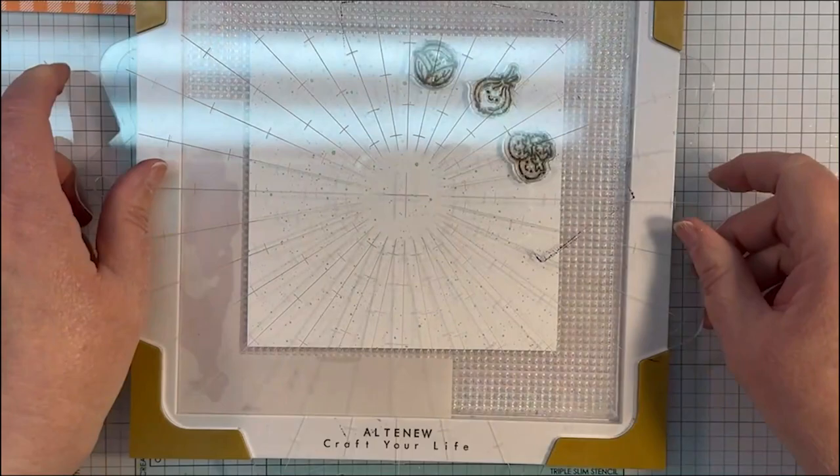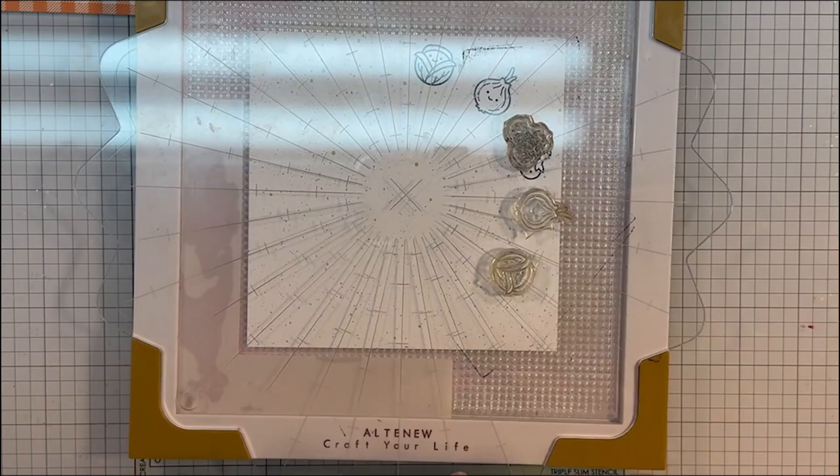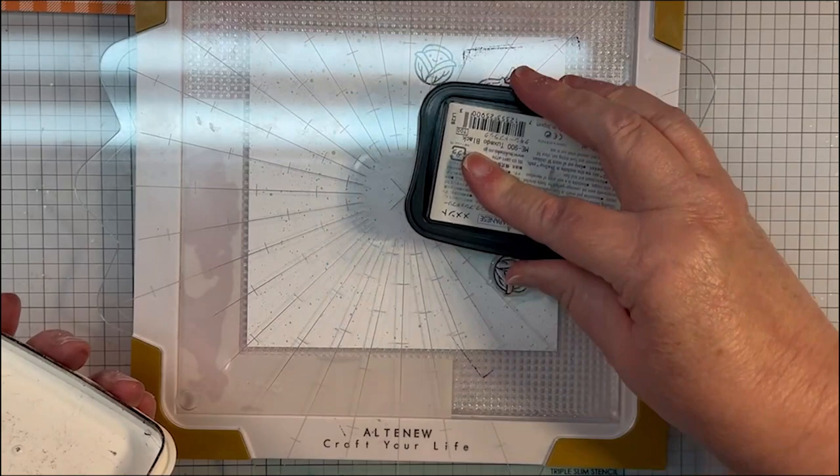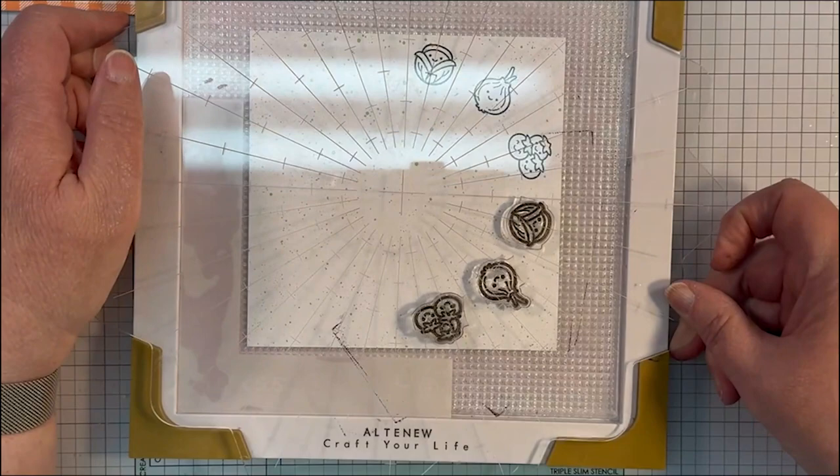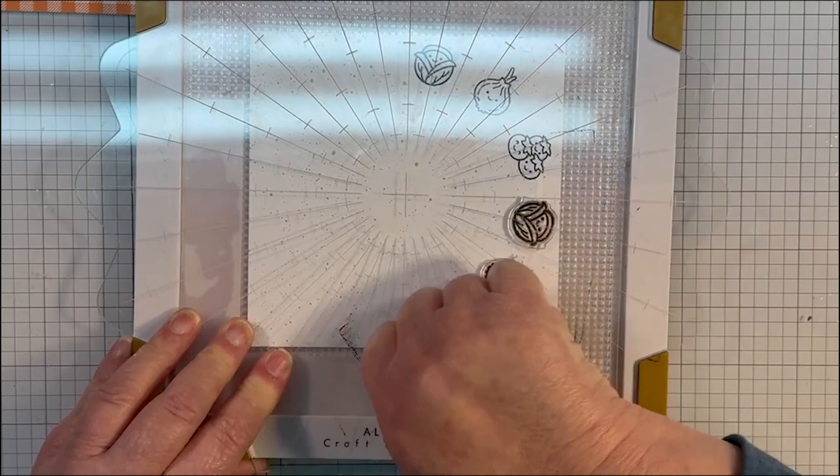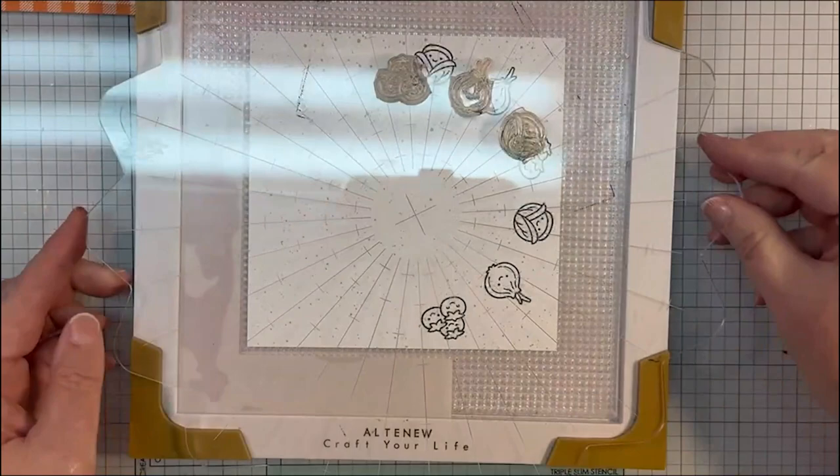I've already placed my stamps on my stamping wheel. How I got that placement is I put the center of my Give it a Whirl die in the center of my paper and then kind of laid my stamps where they would actually be just at the edge of that Give it a Whirl center and not go off the edge of the paper.